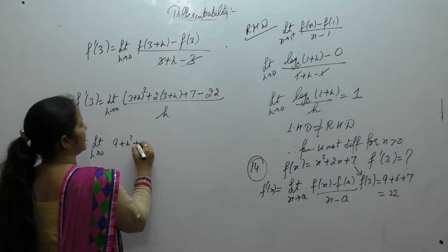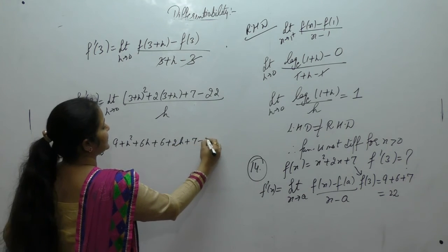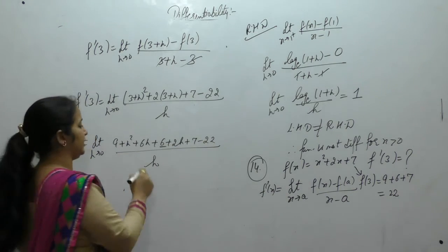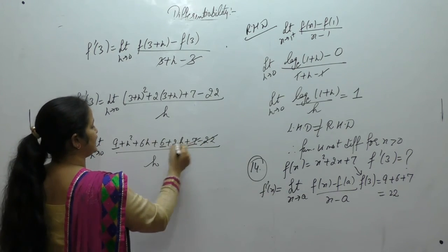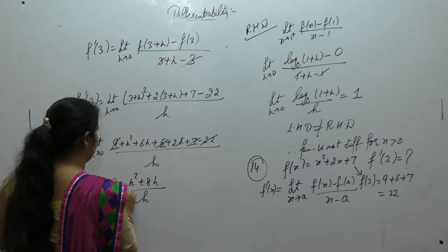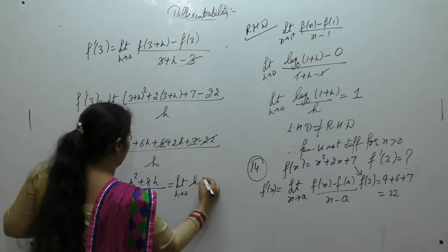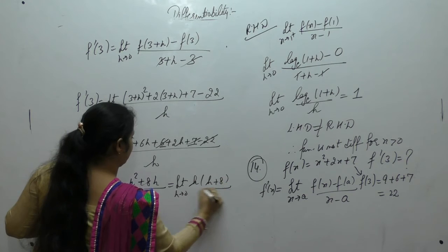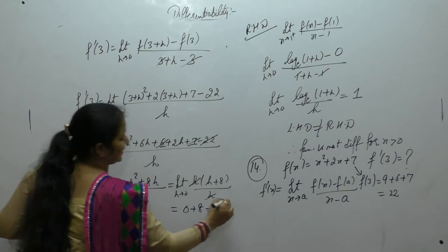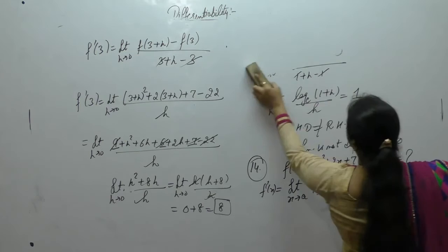Expanding (a + b)² = a² + 2ab + b²: so 9 + 6h + h² + 6 + 2h + 7 − 22. The constants 9 + 6 + 7 = 22 cancel. We are left with h² + 8h over h. Taking h common: h(h + 8) / h. Putting limit h = 0: 0 + 8 = 8. So f'(3) = 8.